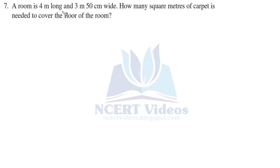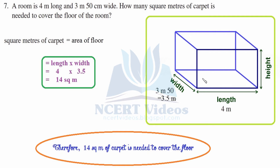Seventh question: a room is 4 meter long and 3 meter 50 centimeter wide. How many square meters of carpet is needed to cover the floor? Length is 4 meter and width is 3 meter 50 centimeter. Convert centimeter to meters: 3 meter 50 centimeter equals 3.5 meter. Area equals length into width: 4 into 3.5 gives 14 square meter. Therefore 14 square meter of carpet is needed.